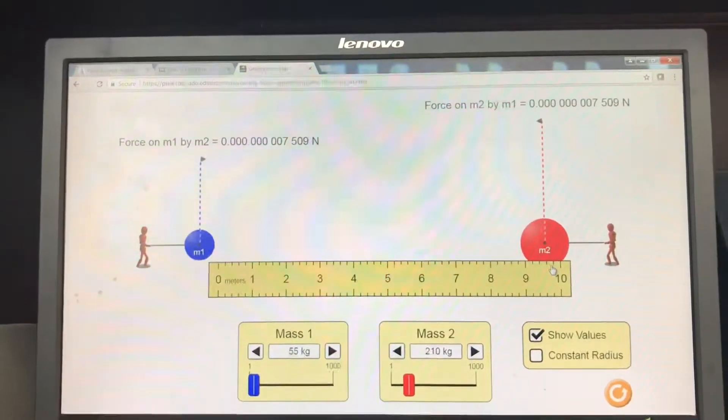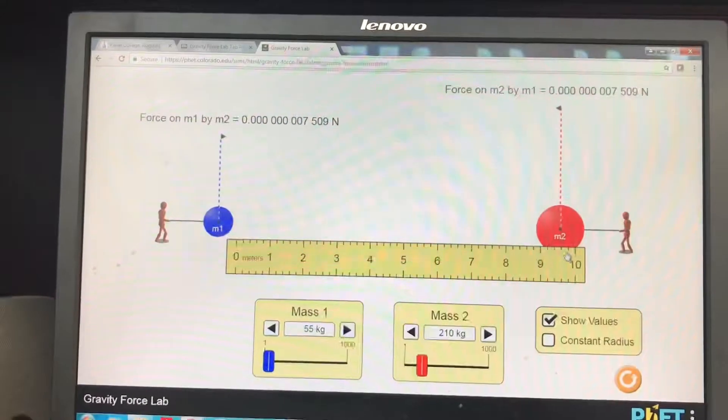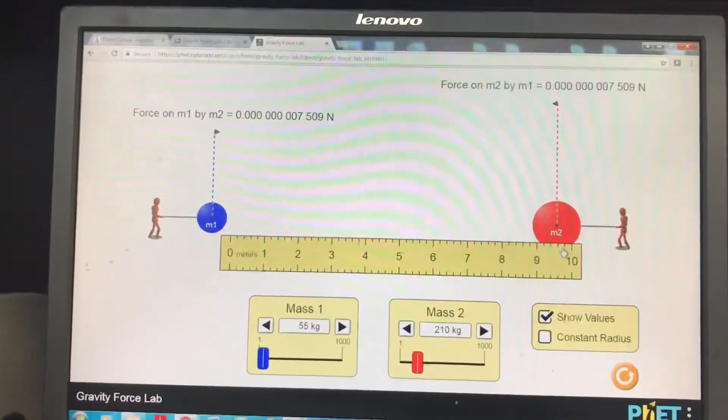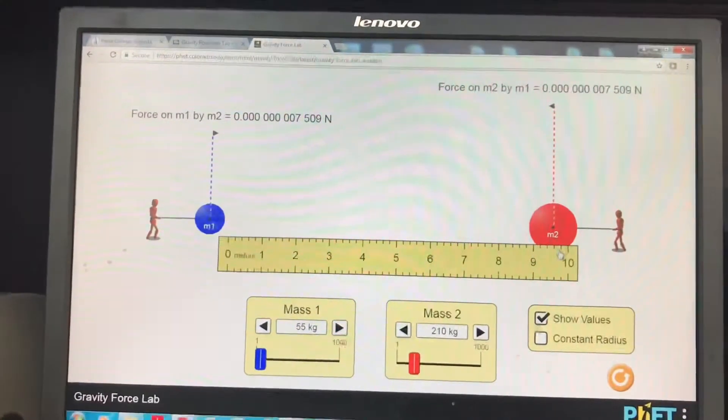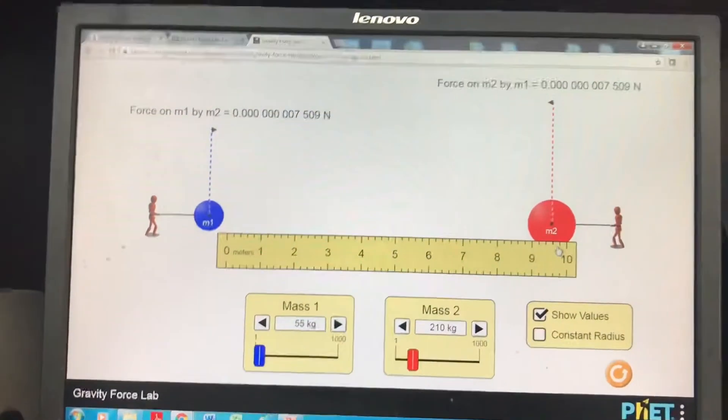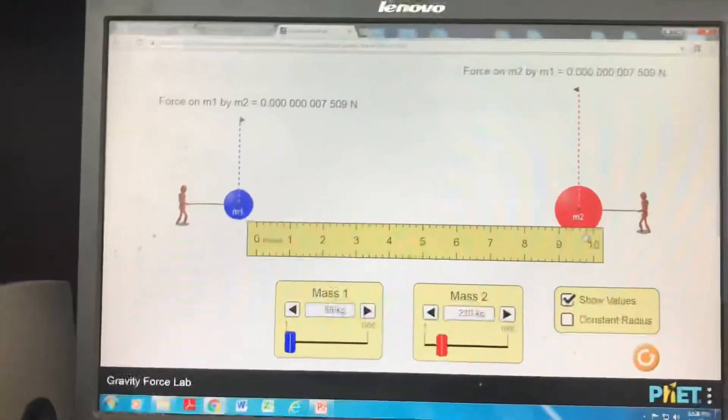Those are the features of this lab - it has two masses you can change and the distance between. In the table you're asked to keep various ones fixed - sometimes m1 fixed, vary m2, or vary the distance. That's what this lab is about.